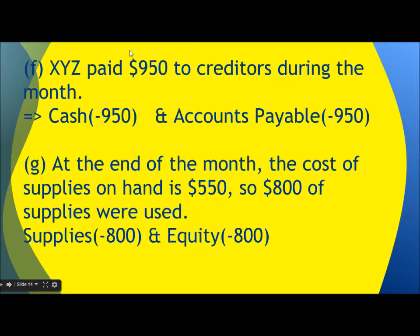XYZ paid $950 to creditors during the month. Cash decreases by $950 on the asset side, and accounts payable also decreases by $950 on the liability side — both sides of the equation reduce by $950, so it remains balanced. At the end of the month, the cost of supplies on hand is $550, meaning $800 of supplies were used. We deduct $800 from supplies on the asset side and the same amount from owner's equity.